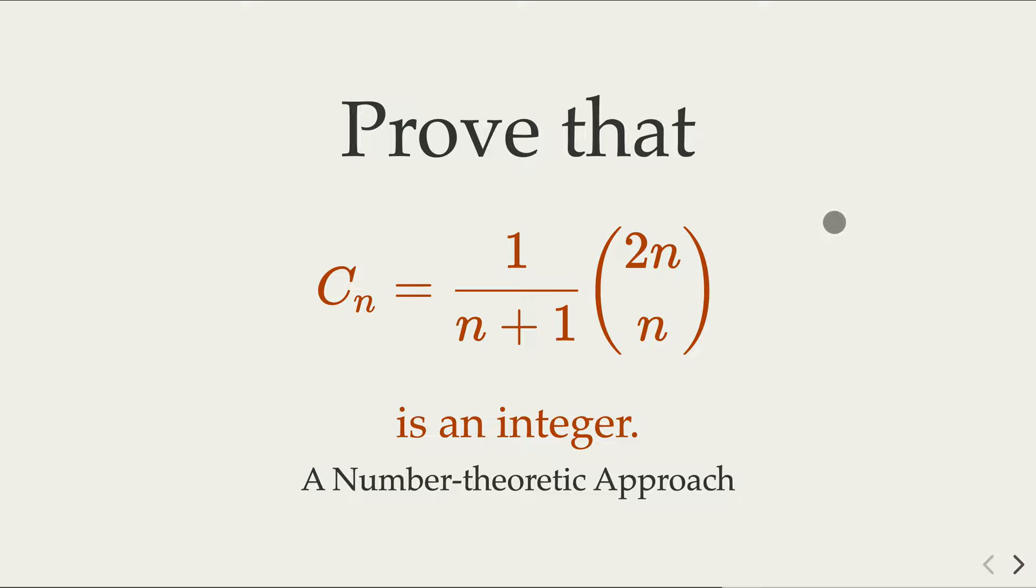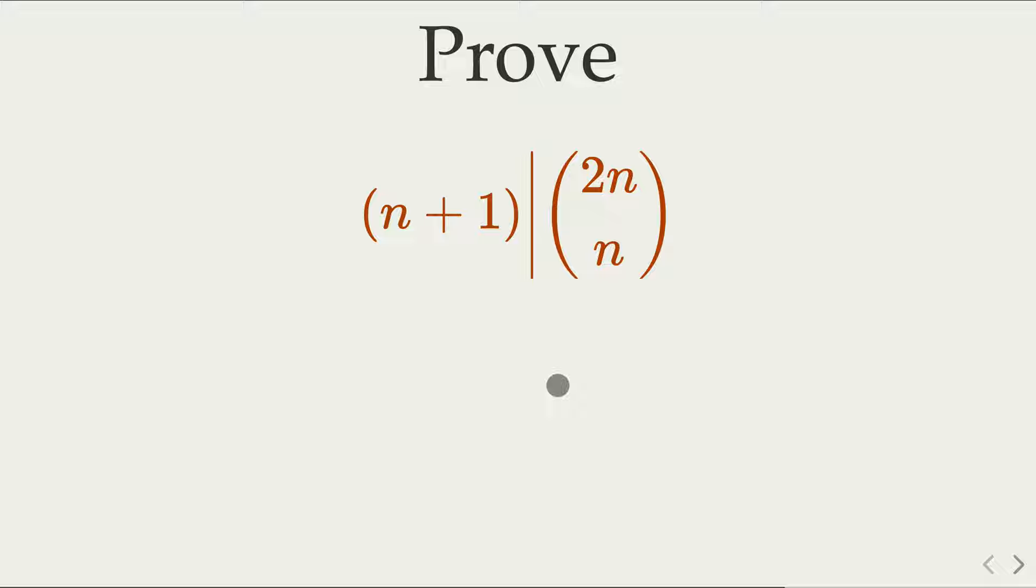We're trying to prove that 2n choose n, the binomial number, divided by n plus 1 is an integer, and we're going to take a number theoretical approach for the proof. We have proved similar facts in an earlier video, but we're using a different approach. That is, in a previous video, we proved that n plus 1 divides 2n choose n, which is the same thing we're trying to prove today.